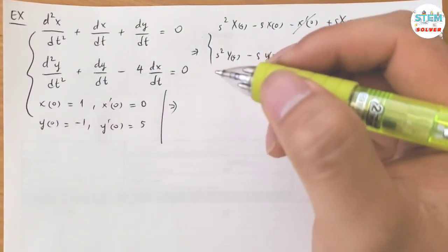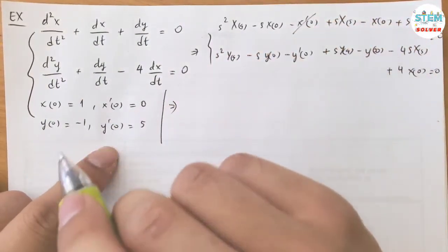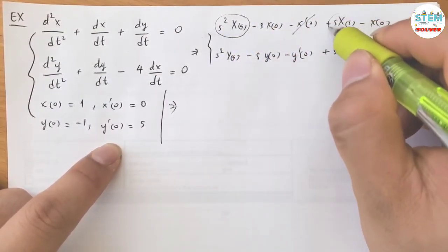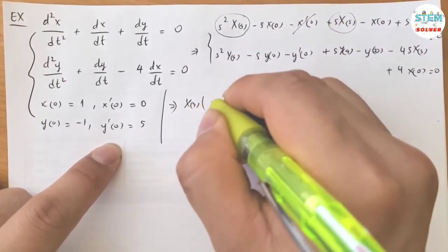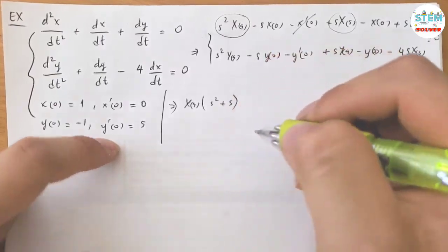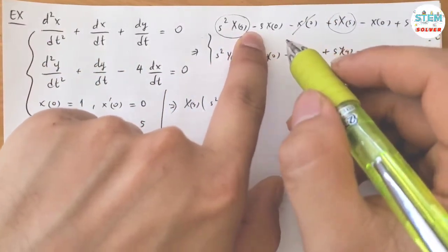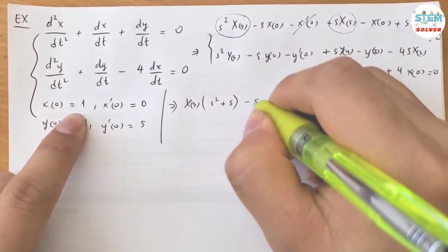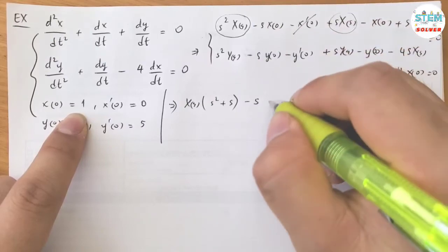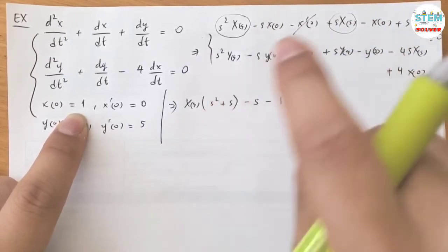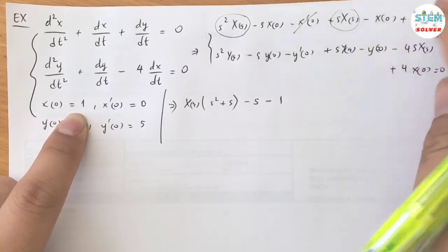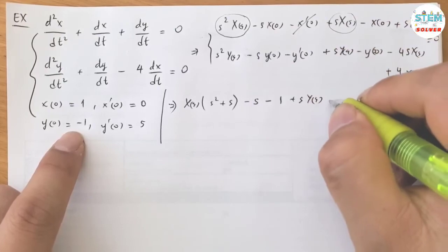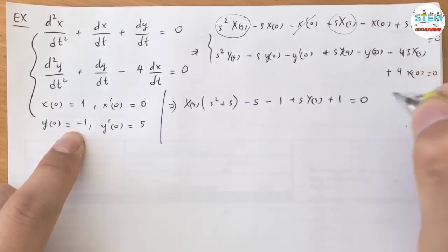We have a lot of things to do. Take a look at capital X of s and factor it out. x of 0 equals 1, so I have negative s minus 1, plus capital X of s, minus y prime of 0, which is positive 1, equals 0.